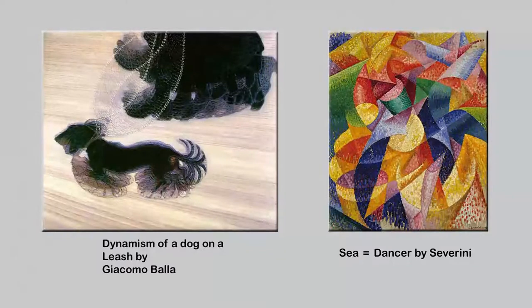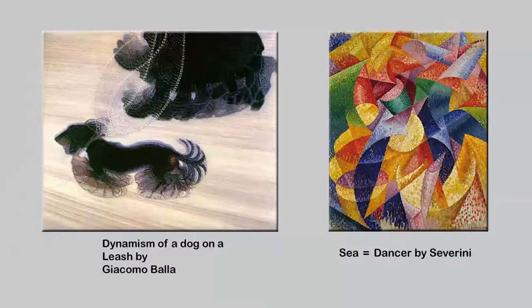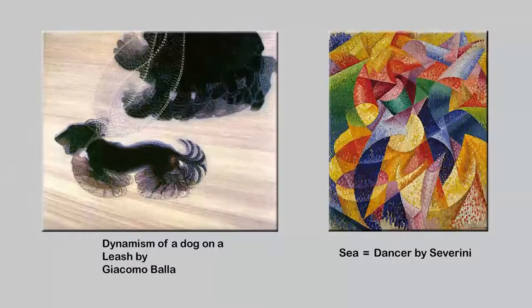Look at these two paintings by Giacomo Balla and Severini respectively. The one on the left by Giacomo Balla is still recognisable because you can see the dog and the woman. Though the dog might appear to have several legs and the woman as well, it would be a representational mistake to count those legs. What we need to respond to is how a certain movement and speed has been evoked by repeating the limbs. Similarly, if we try to identify the sea dancer in this painting by Severini, we will be confused. What we see is neither the dancer nor the sea but a visual effect of a certain kind of movement.